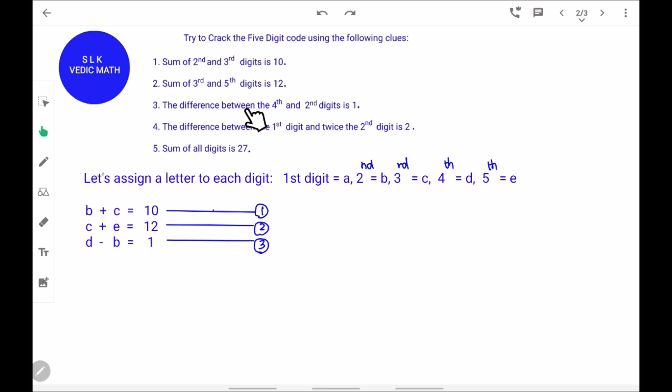In the third clue, it says the difference between the 4th and the 2nd digit is 1. The 4th digit is D and the 2nd digit is B. So, D minus B equal to 1.